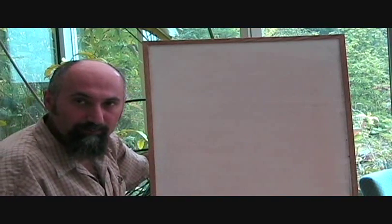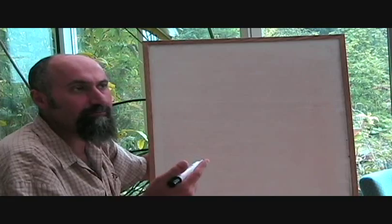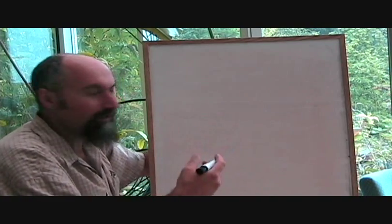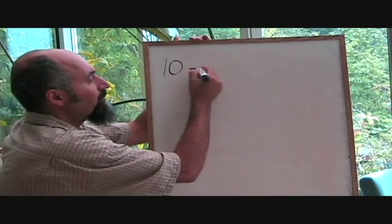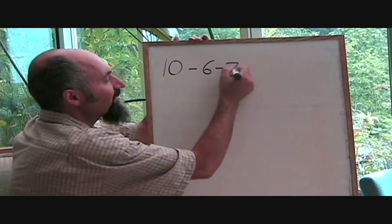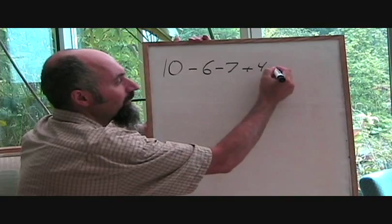So those are simple numbers, two numbers. Let's try five or six numbers together, switching between them. So let's say you have negative 10 minus 6 minus 7 plus 4 minus 2.